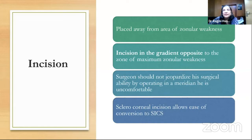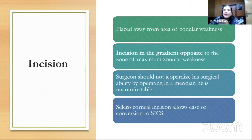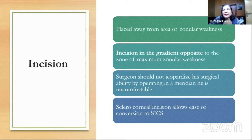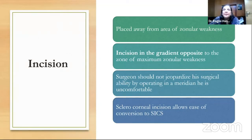The surgery starts with planning the incision. Ideally, plan the incision away from the zonular weakness. It may not always be possible, but if the weakness is superior or superior temporal, a SICS incision can be managed there. If your incision is at the site of weakness, applying pressure at the incision site will invite vitreous into the wound — that is very important to avoid.